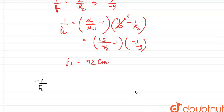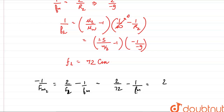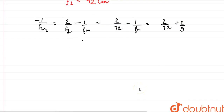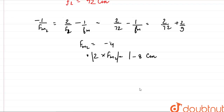Putting it into the final equation for fM2: −1/fM2 = 2/72 − 1/f_mirror = 2/72 − (−2/9). Solving this we get the value of fM2 as −4 cm. The center of curvature would be 2 × |fM2| = 2 × 4 = 8 cm. Taking the modulus, the distance from the second lens is 8 cm.